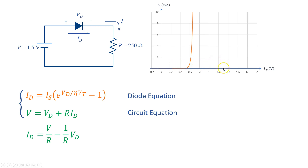It is easier if we choose these two points on the voltage and current axis. The point on the voltage axis is where the current is zero. If we put the current to zero, we will have the diode voltage equal to the supply voltage.